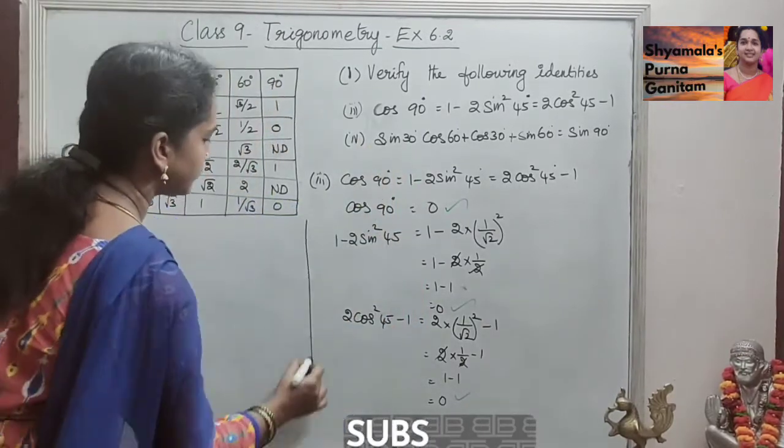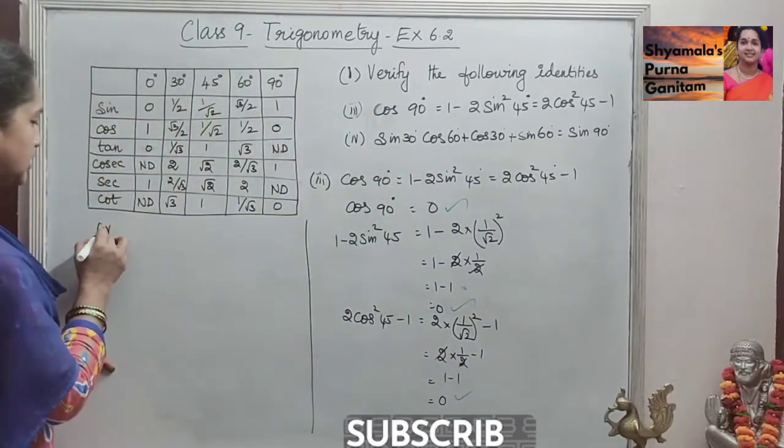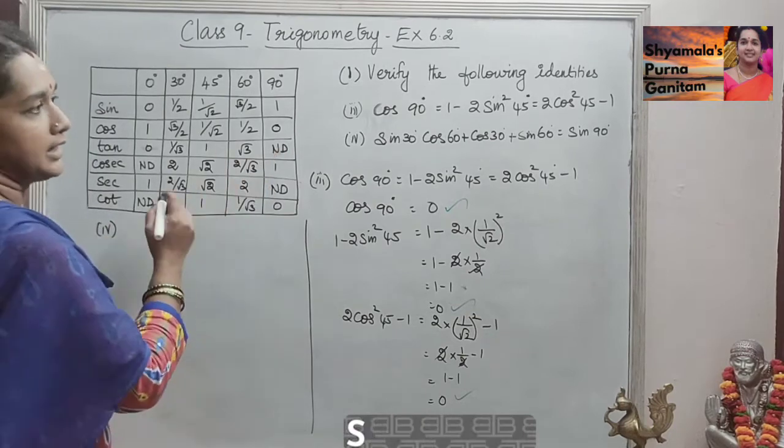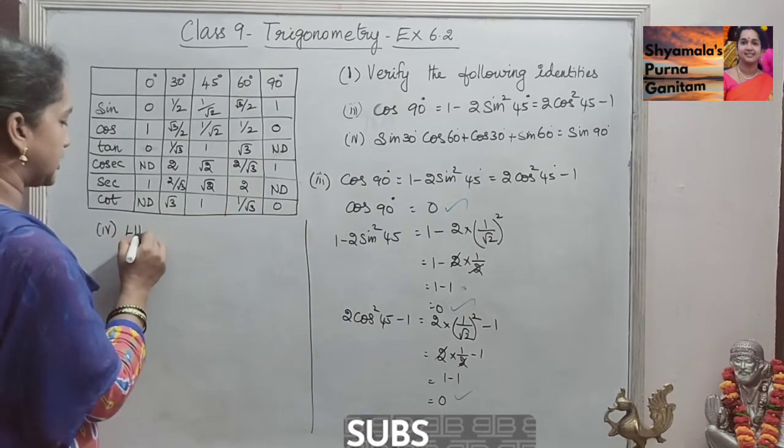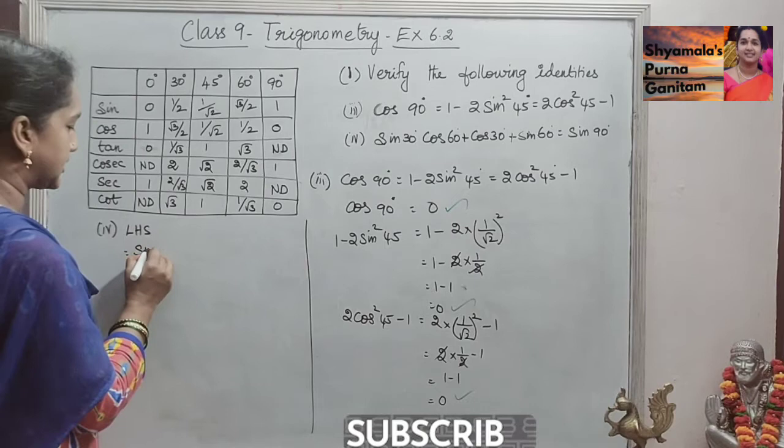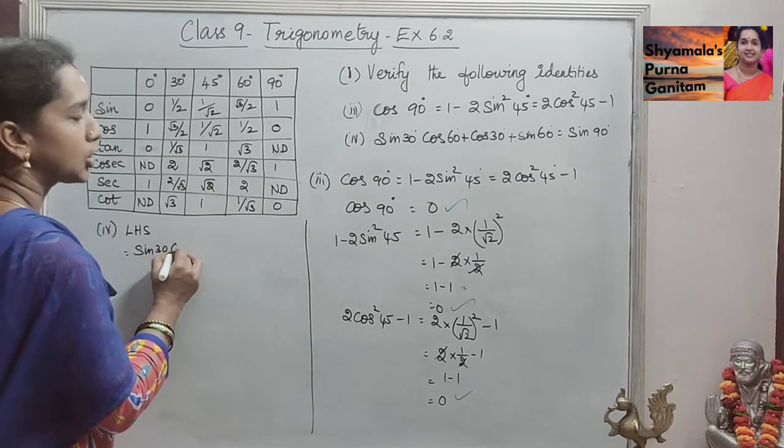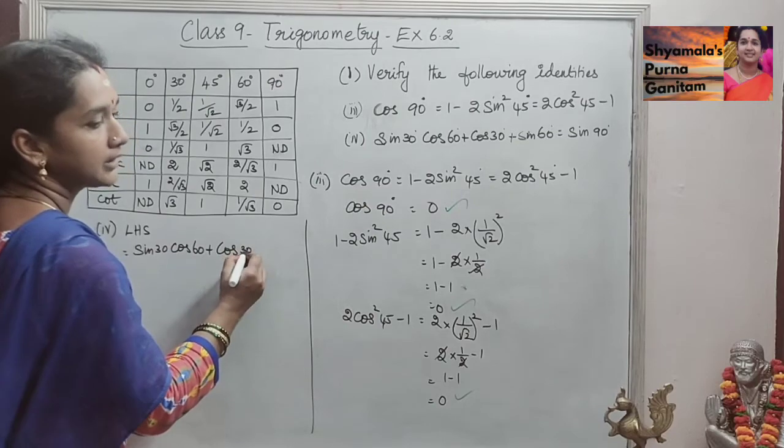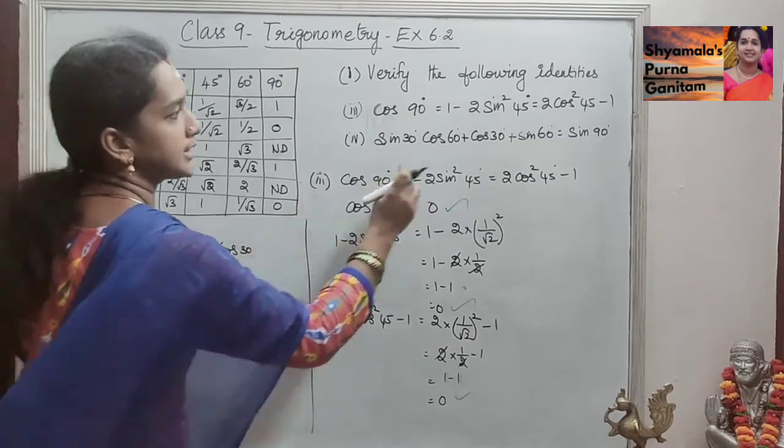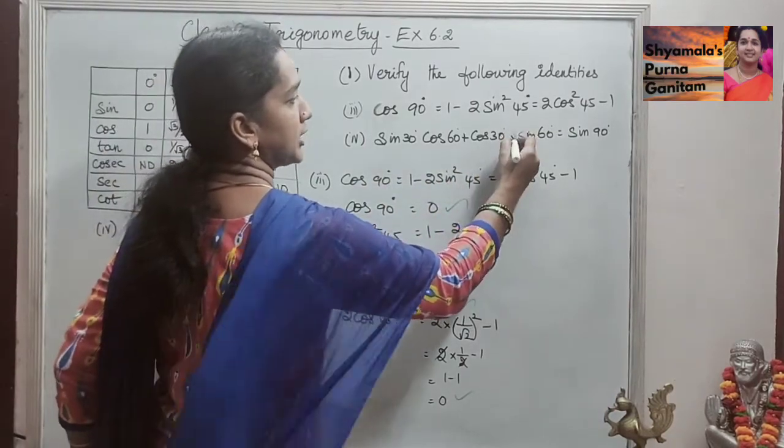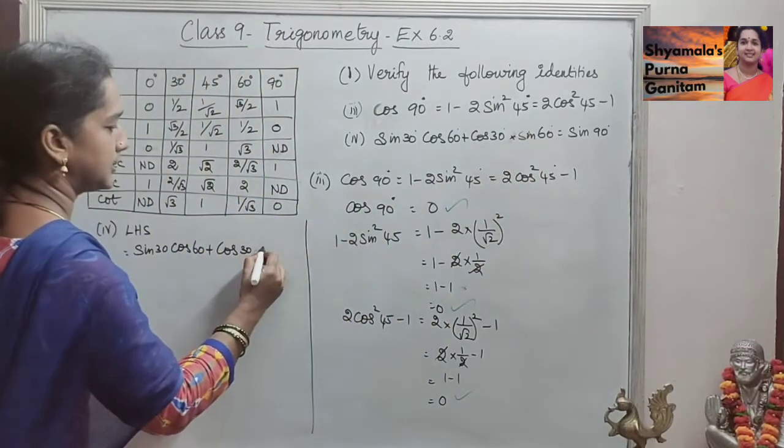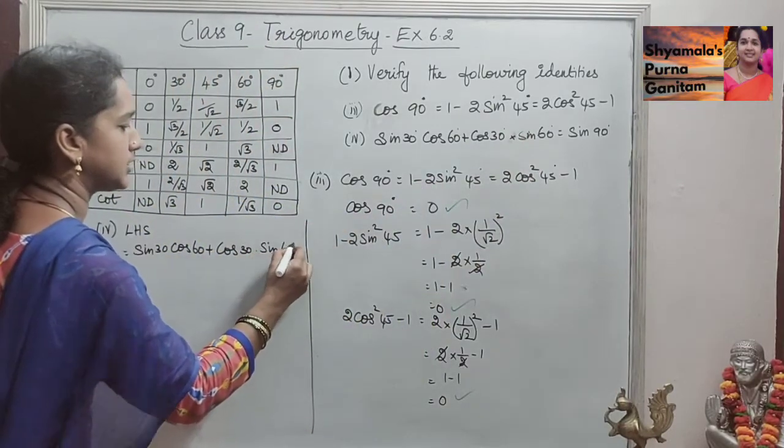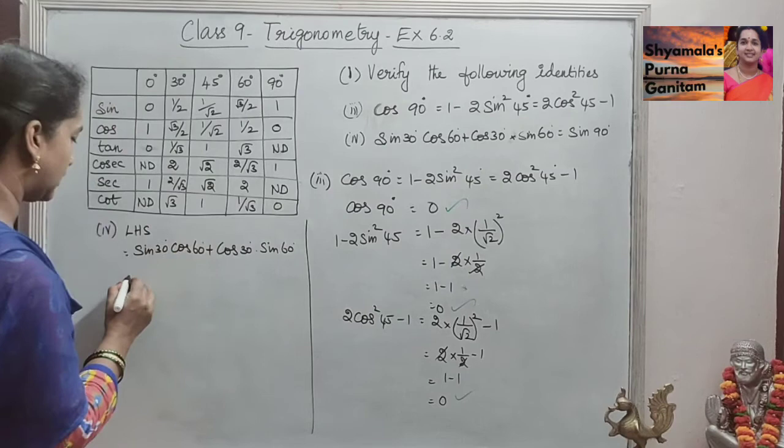Now, 4th sum, I will do it here. The 4th one is, we will take LHS and RHS. LHS is sin 30° cos 60° plus cos 30° into sin 60°, so this is multiplication into sin 60°, so this is the LHS.